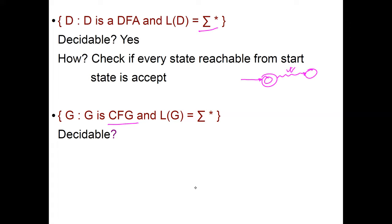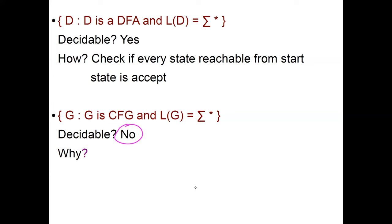What about the same question for context-free grammars — is this decidable? No, it's not. This is where we use the power of Turing machines to pinpoint this fine separation between DFAs and context-free grammars. The corresponding language for context-free grammars is undecidable. Why? Because if you could decide this, you could decide ATM, which is undecidable. The idea is to simulate a Turing machine via context-free grammars, and the proof would be much more complicated with Java. We're going to see the proof now.